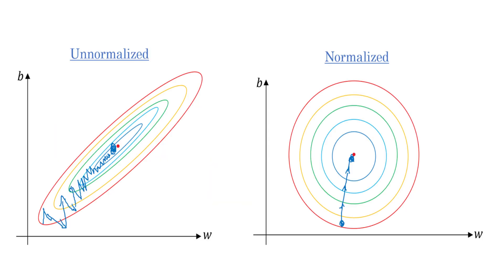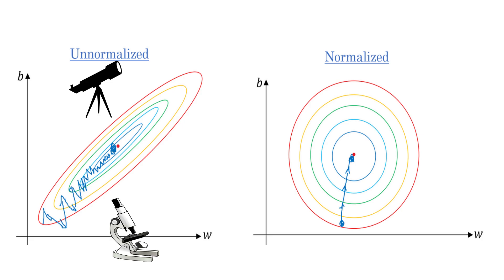Think of gradient descent trying to navigate these uneven scales — it's like trying to adjust a microscope and a telescope at the same time. The algorithm struggles to find the right step size, leading to slow training and subpar results.